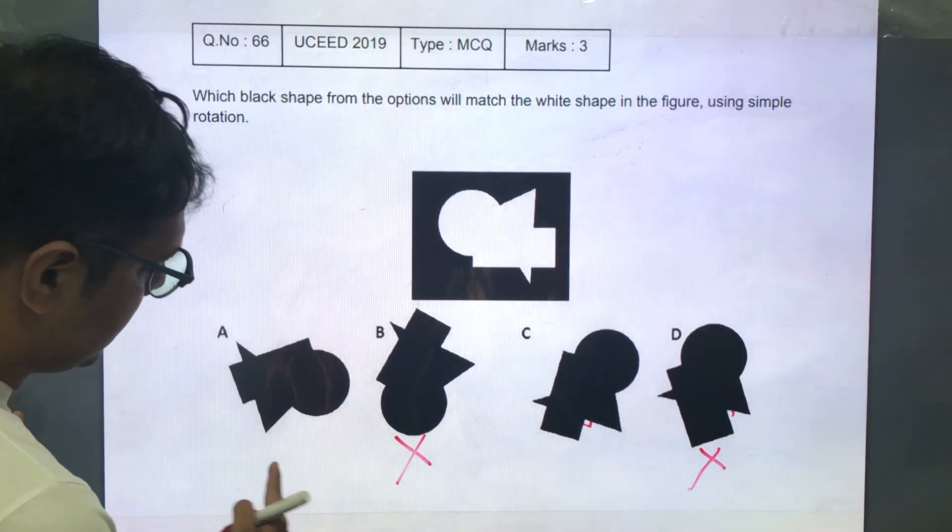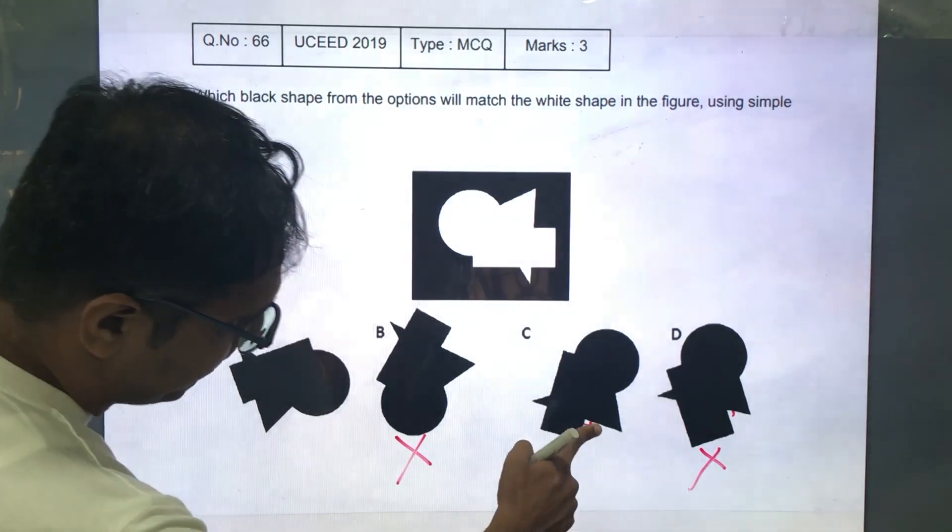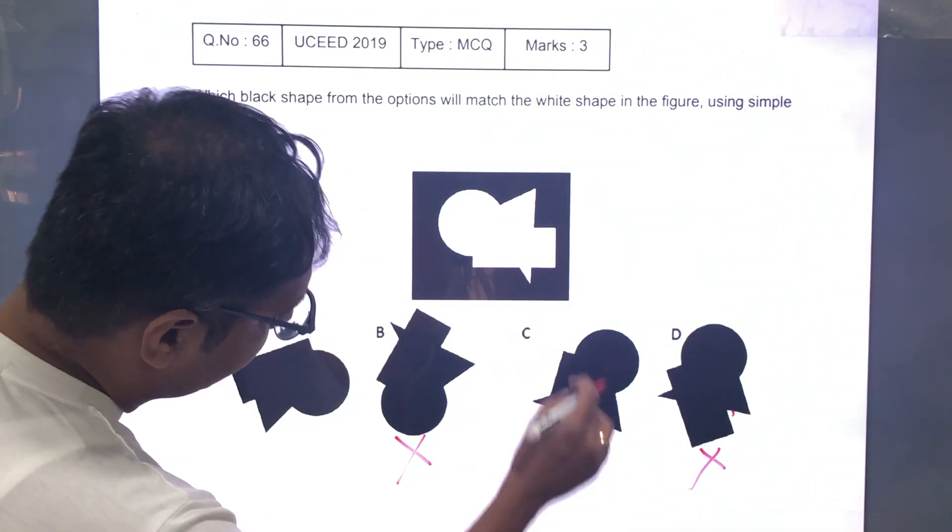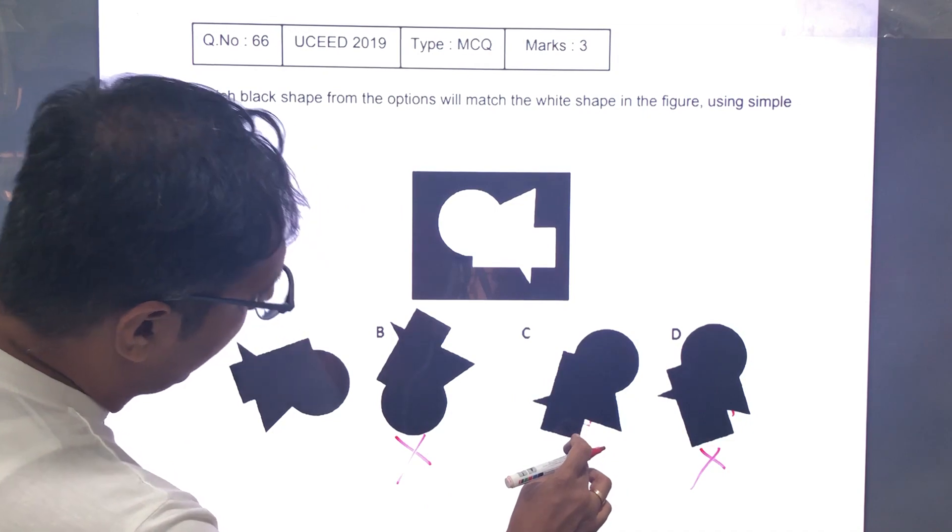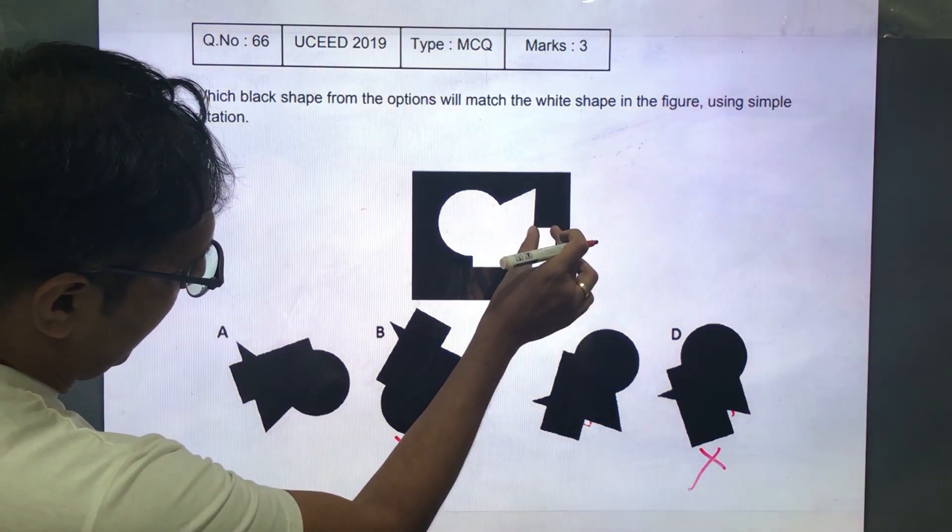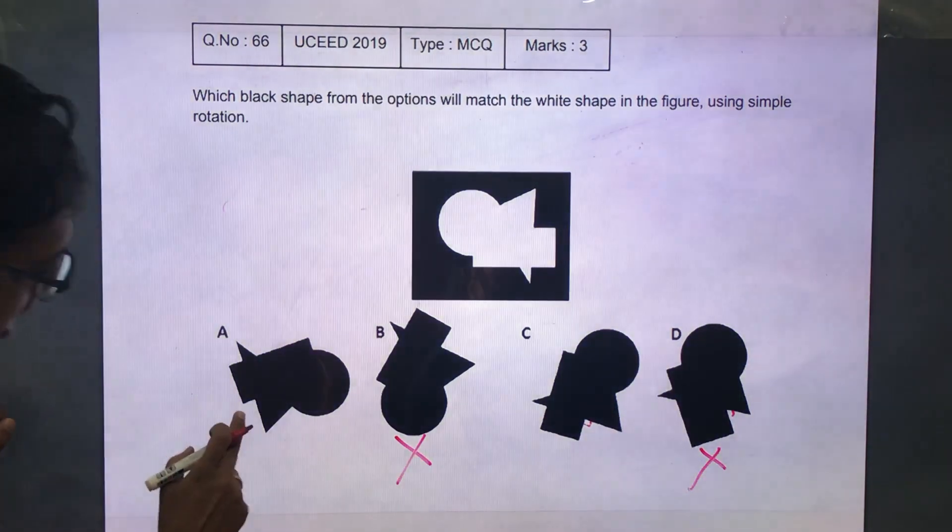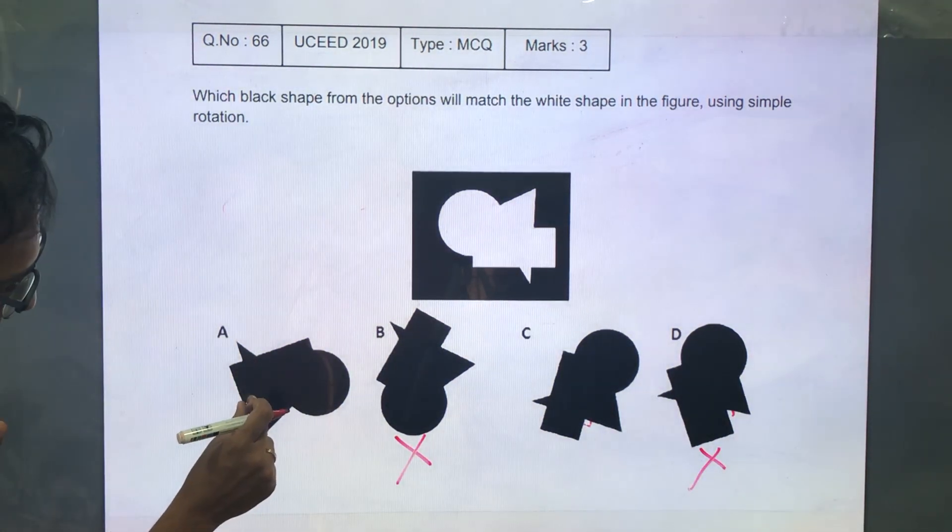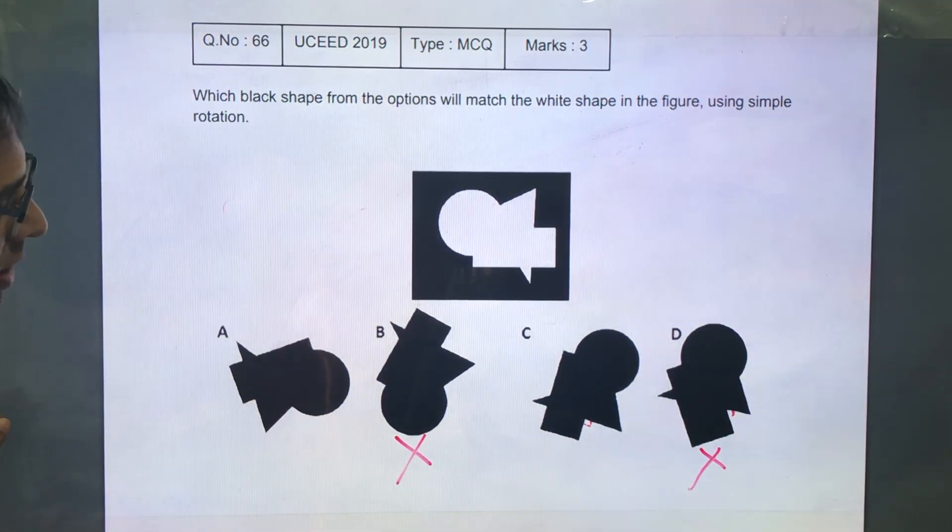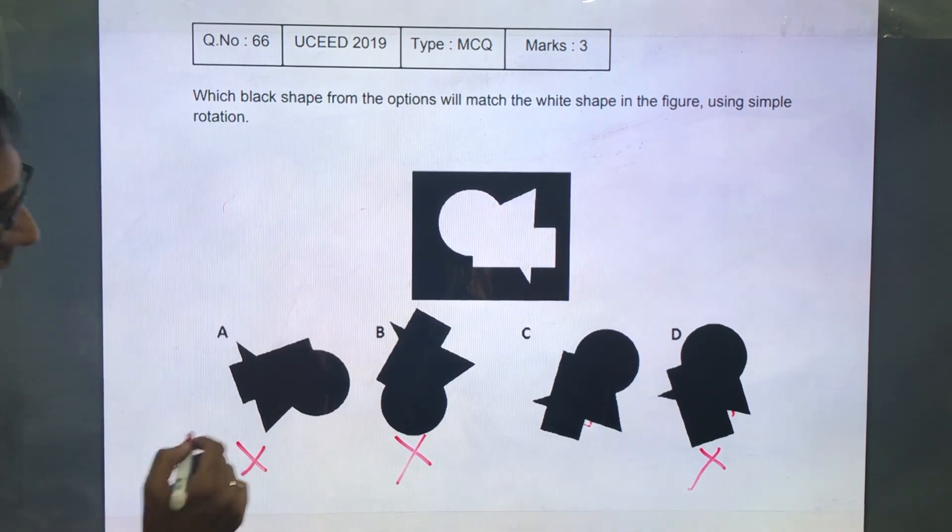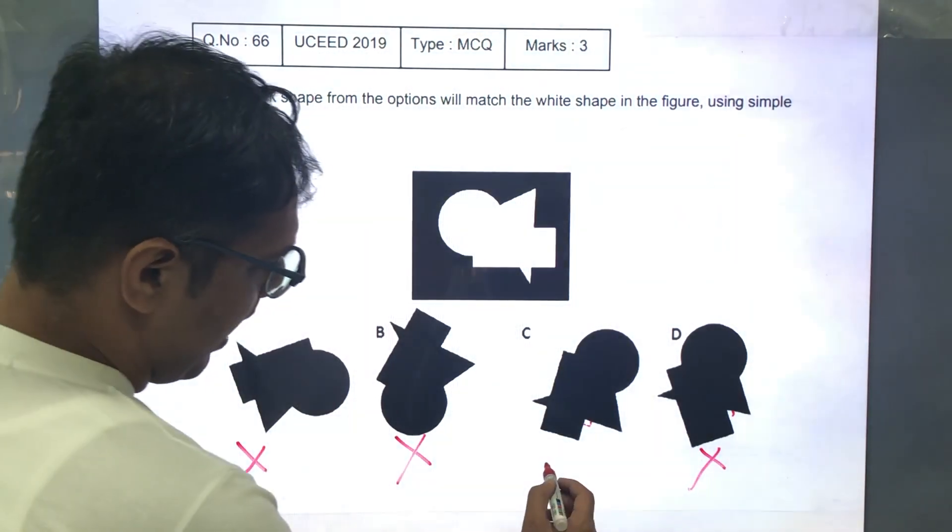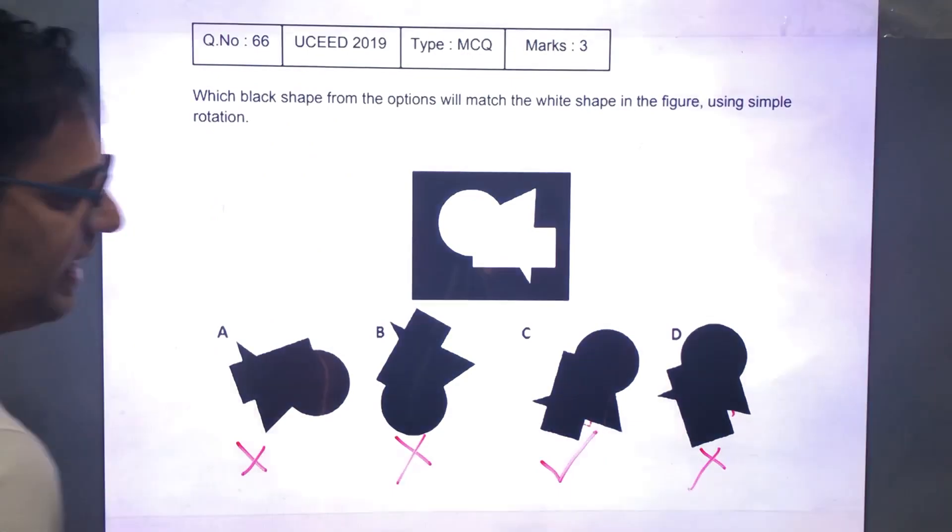Again if you see this same part. This part here. You will see that the rectangular shape that is coming out is much larger. It matches option C rather than option A, in which the rectangular piece coming out is much smaller. Hence A is also eliminated and C is therefore the right answer.